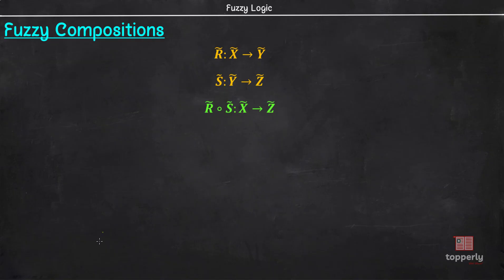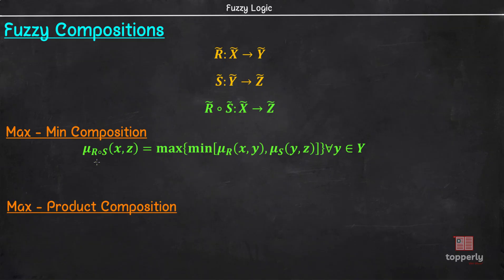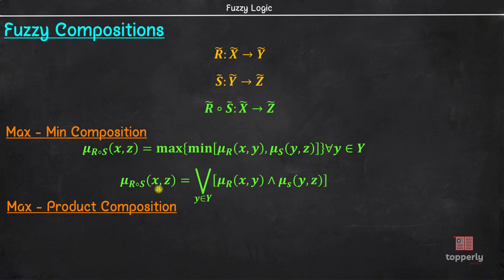This composition operation can either be Max-Min Composition or Max-Product Composition. The membership function for Max-Min Composition is defined as: Mu(R∘S)(x, z) = maximum over all y of the minimum of Mu_R(x, y) and Mu_S(y, z), for all y belonging to Universe Y. This can be shorthanded as Mu(R∘S)(x, z) = union of Mu_R(x, y) intersection Mu_S(y, z). You will understand this better when we see the example question.